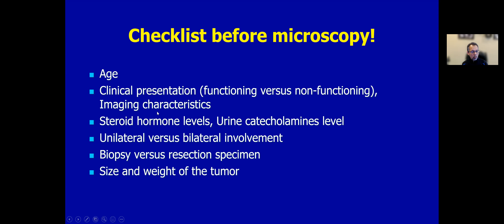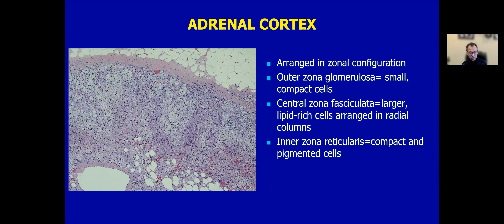The checklist includes: What is the patient's age? What is the clinical presentation? Am I dealing with a functioning or non-functioning tumor? What are the imaging characteristics? Am I dealing with unilateral or bilateral involvement? Steroid hormone levels and urine catecholamine levels? Am I dealing with a biopsy or resection specimen? Biopsy is typically not done for a pheochromocytoma type of situation because it can induce a catastrophic reaction. Biopsy would be done in a non-functional tumor setting where metastasis is questioned. If you have an adrenal resection specimen, size and weight of the tumor can help determine potential malignant nature.